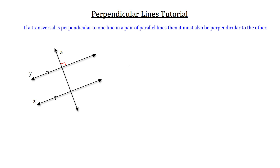then it must also be perpendicular to the other. The pair of parallel lines in this case are lines Y and Z. So if this transversal X is perpendicular to one of those lines — as shown by the red perpendicular square — then it must also be perpendicular to the other line. We can draw a red box there as well to indicate that X is perpendicular to Z.